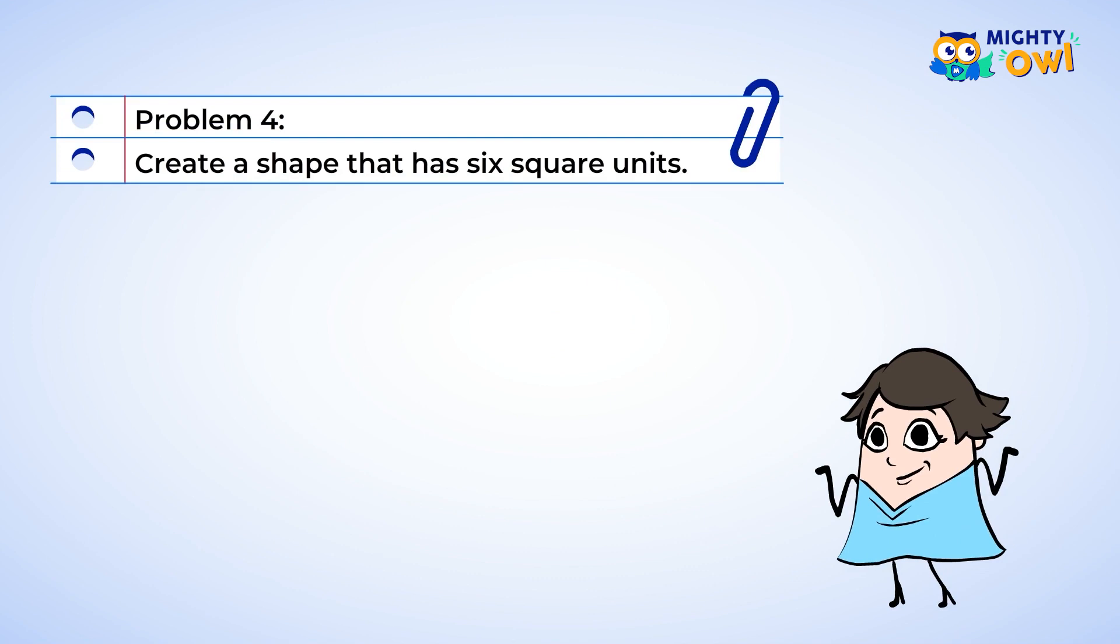I want to create a shape that has six square units. And here we have six unit squares. Well, we can combine them to make a shape. Let's combine them like this. Ooh, what a cool rectangle we made.